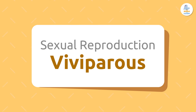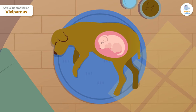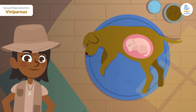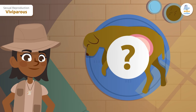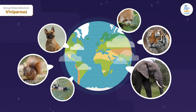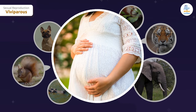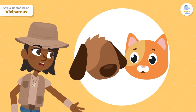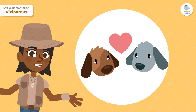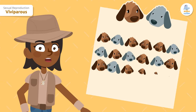Viviparous! The babies of viviparous animals grow in their mother's wombs, and then the mothers give birth to them. What animals are viviparous? Almost all mammals, including us humans, since we grow in our mother's wombs and are born from them. Dogs and cats are also examples of viviparous animals. Do you know how many puppies a female dog can give birth to? Up to 24 puppies in the same litter!